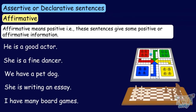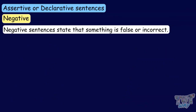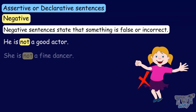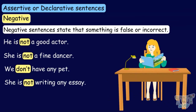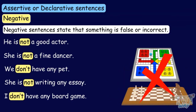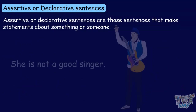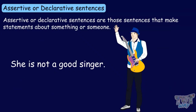On the other hand, negative sentences give some negative information about something or someone. Like: He is not a good actor. She is not a fine dancer. We don't have any pet. She is not writing any essay. I don't have any board game. These are all negative assertions. So, assertive or declarative sentences make statements about something or someone and always end with a period.